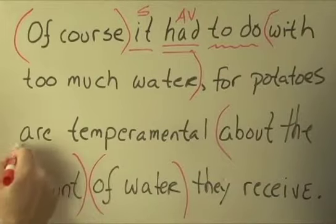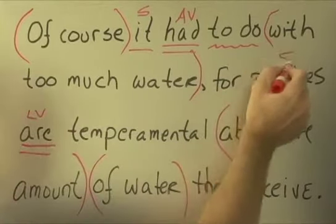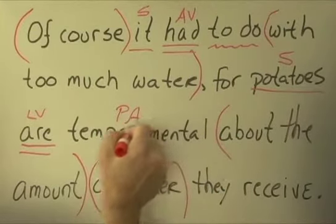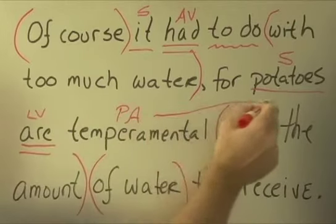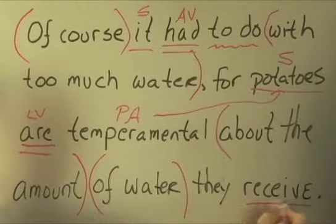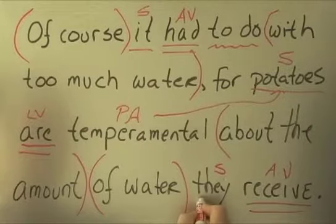We have are, a linking verb, the classic linking verb with its subject. And a predicate adjective jumping back over that linking verb and describing the subject. And we've got receive, which looks like an action verb with its subject, they.